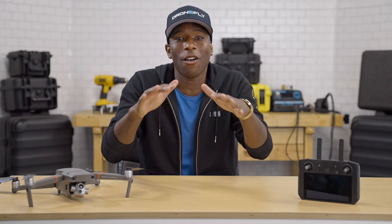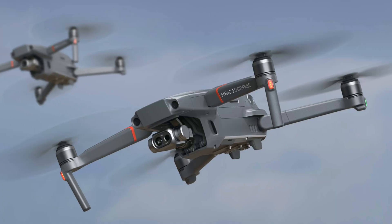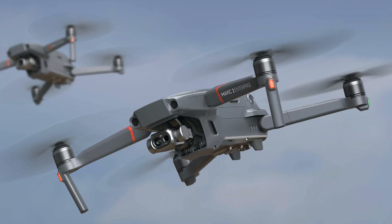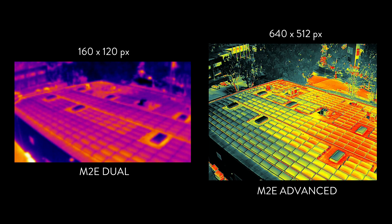And that isn't even the only camera that the Advanced has — it also has a thermal camera. If you're familiar with the Mavic 2 Enterprise Dual, you'll know that it also has a thermal camera. But the one found on the Advanced is 640 by 512 pixels instead of the measly 160 by 120 on the Dual.